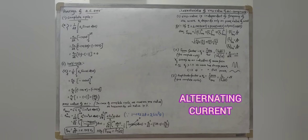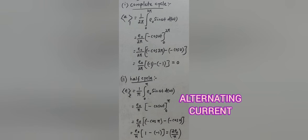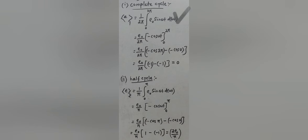Let us see the average value of AC EMF over a complete cycle and a half cycle respectively. For a complete cycle, the average value is written as the integration from 0 to 2π of e₀ sin(ωt) d(ωt), divided by 2π. This is because for a complete cycle, 0 to T is the time period and T corresponds to 2π. So we integrate the EMF signal e₀ sin(ωt) throughout the entire interval 0 to 2π and divide it by 2π.